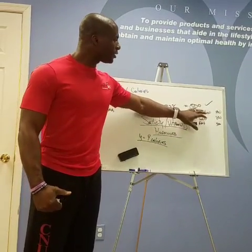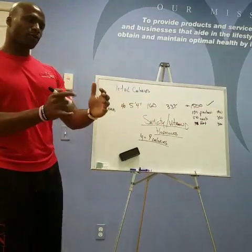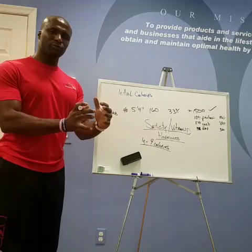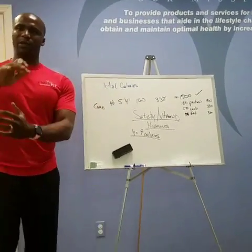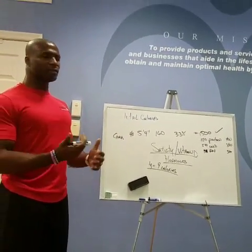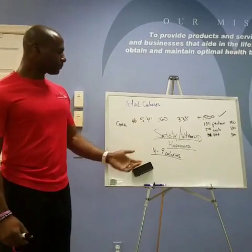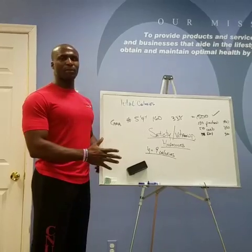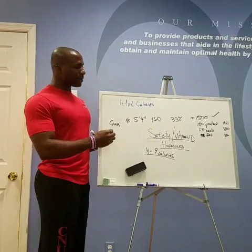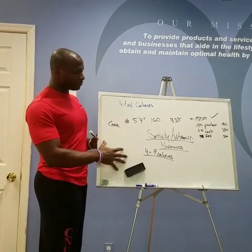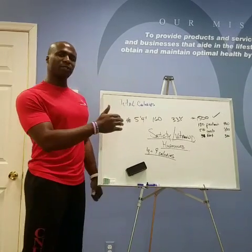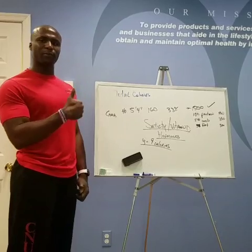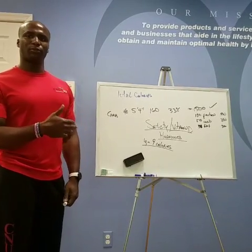Once you have your body type dialed in, play around with macronutrients. Start at, say, 1,500 calories and try one macronutrient split for a week or two — a certain ratio of protein, carbs, and fat — then adjust that balance until you find what works for your body. There's a lot more we can talk about with food and metabolism, but the key takeaway is: food is not just the calories, it's not just the macros, it's how these things affect your body hormonally.